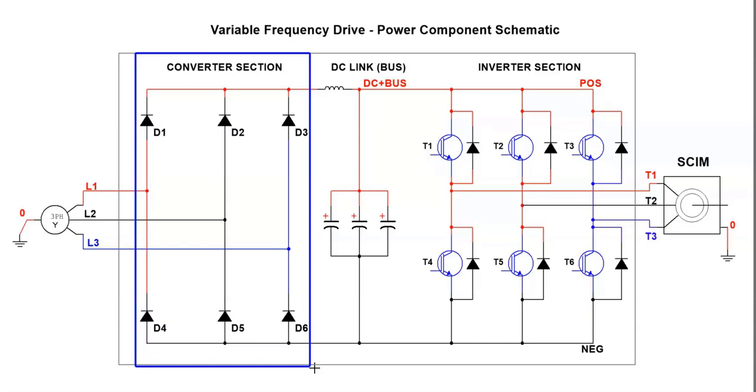The next section is called the DC link or DC bus. You will hear different terminology on that one. And what happens in the DC bus is we filter out current and voltage pulses. So this device up on this DC plus rail, we'll call it, is called a choke.